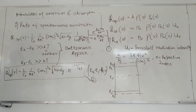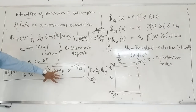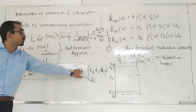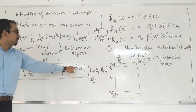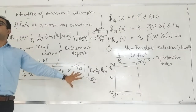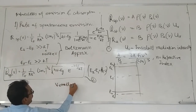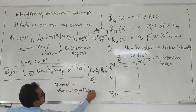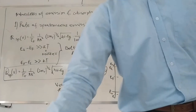In thermal equilibrium, this expression has e raised to the minus hν over kT. So there is a very small number in the denominator — kT is about 25 meV, while hν is some 2 electron volts or more — so this becomes a large exponent: e raised to a large negative number, which is a very small quantity. So the spontaneous emission rate is very small at thermal equilibrium.